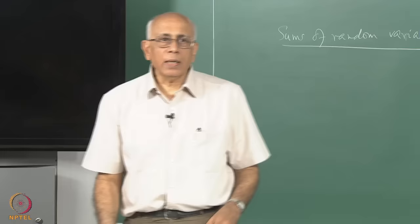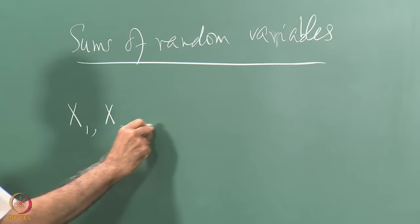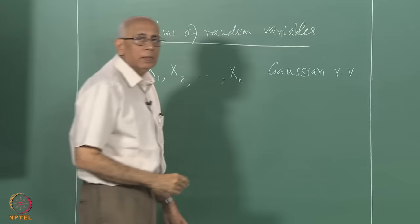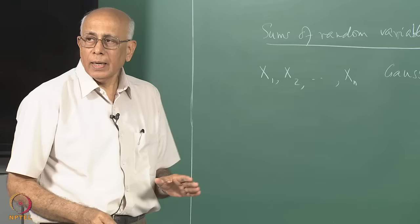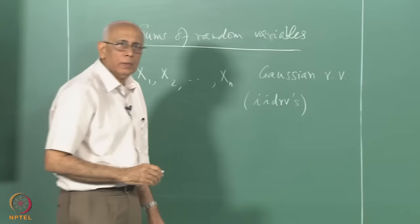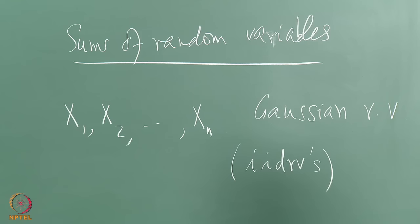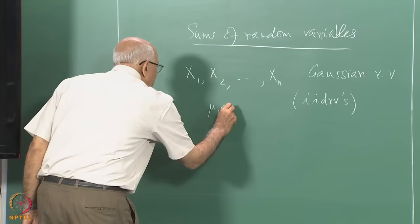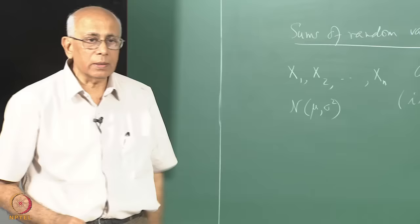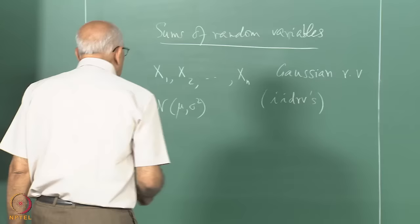I start by asking a very simple question. Suppose I have a set of Gaussian random variables x_1, x_2, up to x_n — each of them is a Gaussian random variable, all identically distributed. So they are independent, statistically independent, identically distributed random variables — iid RVs — each having a Gaussian distribution, a normal distribution with mean mu and variance sigma squared, generally denoted N(mu, sigma squared). Each of them has exactly the same distribution.